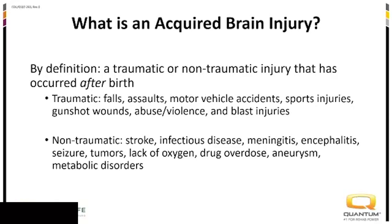Traumatic injuries happen from falls, assaults, car accidents, sports injuries, violence, and gunshot wounds. Non-traumatic injuries are things like strokes, infectious diseases, seizures, tumors, anoxia or lack of oxygen — and actually both of our case studies today are due to anoxia — as well as aneurysms and other metabolic disorders.